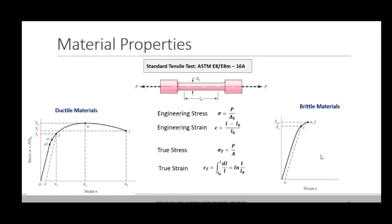Regarding the area under the curve: it is the whole curve — the entire area until material failure — that represents toughness. If you look at the area under only the elastic or yield limit region, that is what we call resilience, which is how much the material is resilient. Toughness is how much energy it can absorb before it fails; resilience is the capacity to absorb energy within the elastic range.